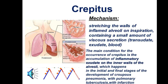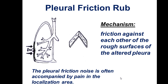First and third stages of pneumonia, or left heart failure. Pleural friction rub is the rubbing against each other of the rough surfaces of the altered pleura. Pleural friction noise or rub is often accompanied by pain in the localization area. This sound may occur in dry pleuritis.